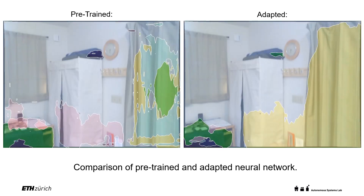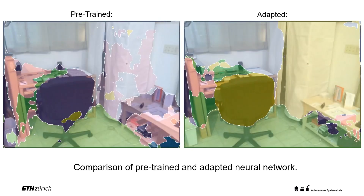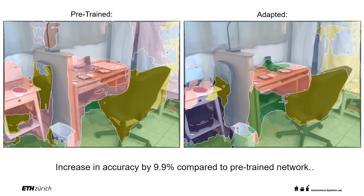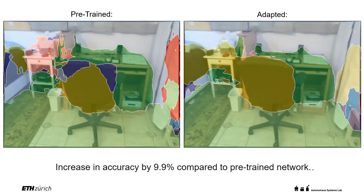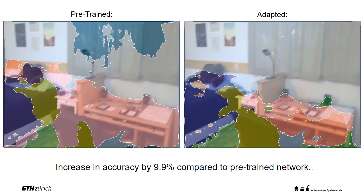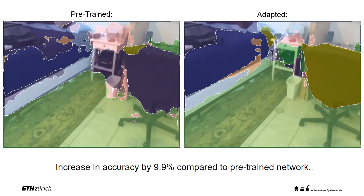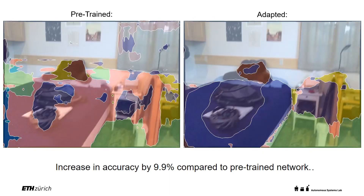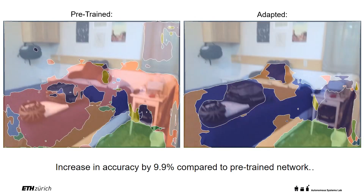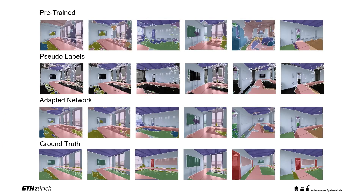Here we illustrate the direct comparison between the pre-trained and adapted network predictions. We show that the adapted network outperforms the pre-trained network on average by 9.9%. Further experiments are provided for scenes recorded in-house using a handheld RGBD sensor. We are among the first to show the effectiveness of continual learning for semantic segmentation for a real-world robotic use case.